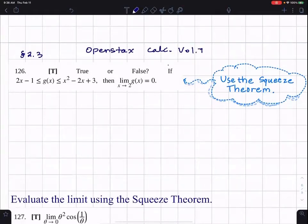All right, what's going on is that they're giving us an inequality where G of X is sandwiched between two functions, and we're trying to find the limit as G of X approaches two.